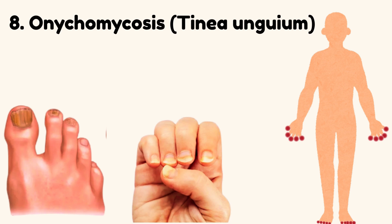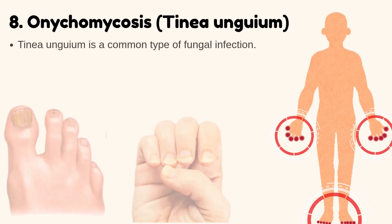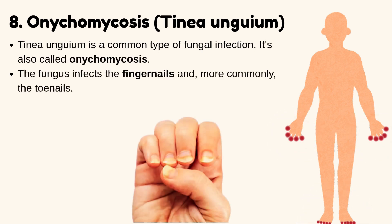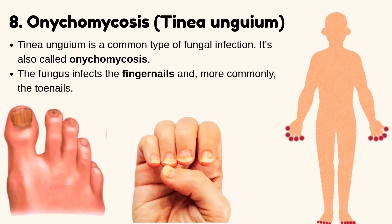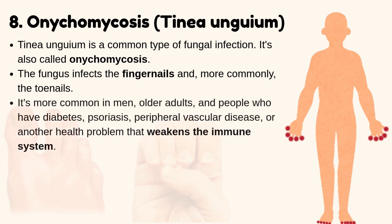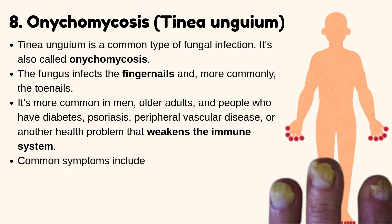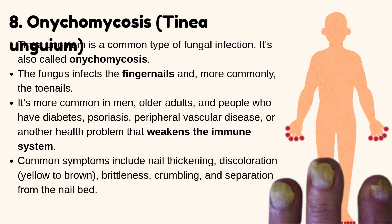Onychomycosis — Tinea unguium. Tinea unguium, also called onychomycosis, is a common type of fungal infection. The fungus infects the fingernails and, more commonly, the toenails. It is more common in men, older adults, and people who have diabetes, psoriasis, peripheral vascular disease, or another health problem that weakens the immune system. Common symptoms include nail thickening, discoloration (yellow to brown), brittleness, crumbling, and separation from the nail bed.